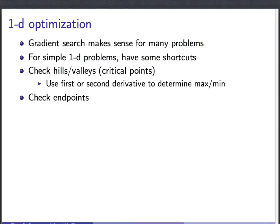For hard problems in the real world, this gradient search procedure makes very good sense, and many times it might be the only thing you can do. For simple 1D problems, there are shortcuts: check for hills or valleys by finding critical points — places where the derivative equals zero — then perform first or second derivative tests. To find all local and global maxes and mins, also check the endpoints of the function if it's defined on a finite interval. I'll show this with two examples.